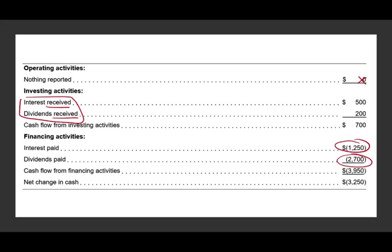Under IFRS for this example, nothing appears in operating activities for these items. Interest received and dividend received are under investing, dividend paid is always financing under both methods, and interest paid is considered financing under IFRS. Hopefully this short session illustrates the difference between U.S. GAAP and IFRS. If you have any questions, please email me, and good luck studying for your CPA exam.